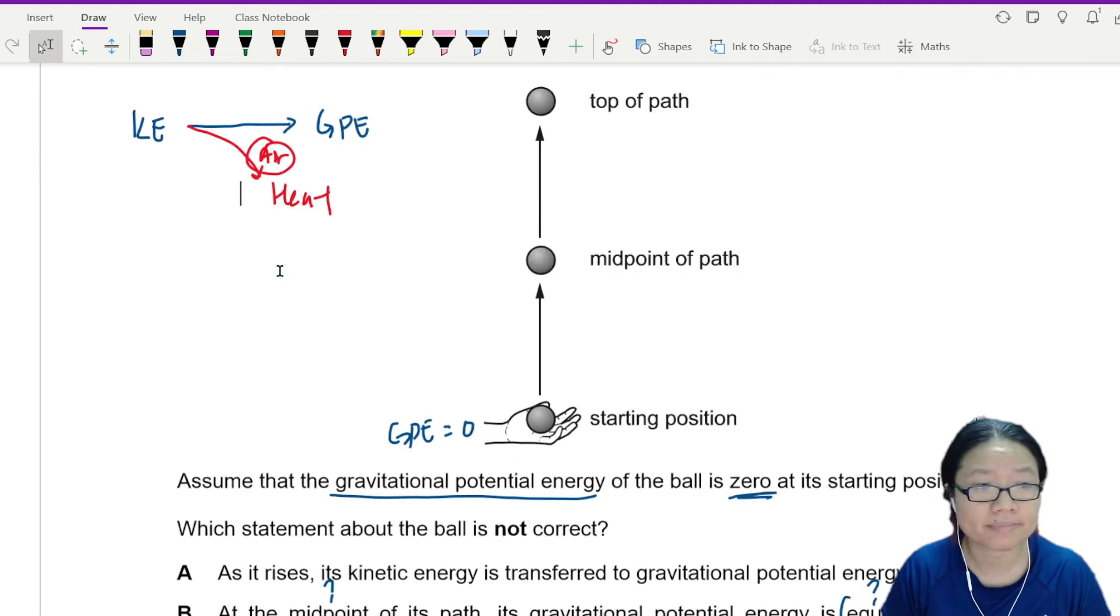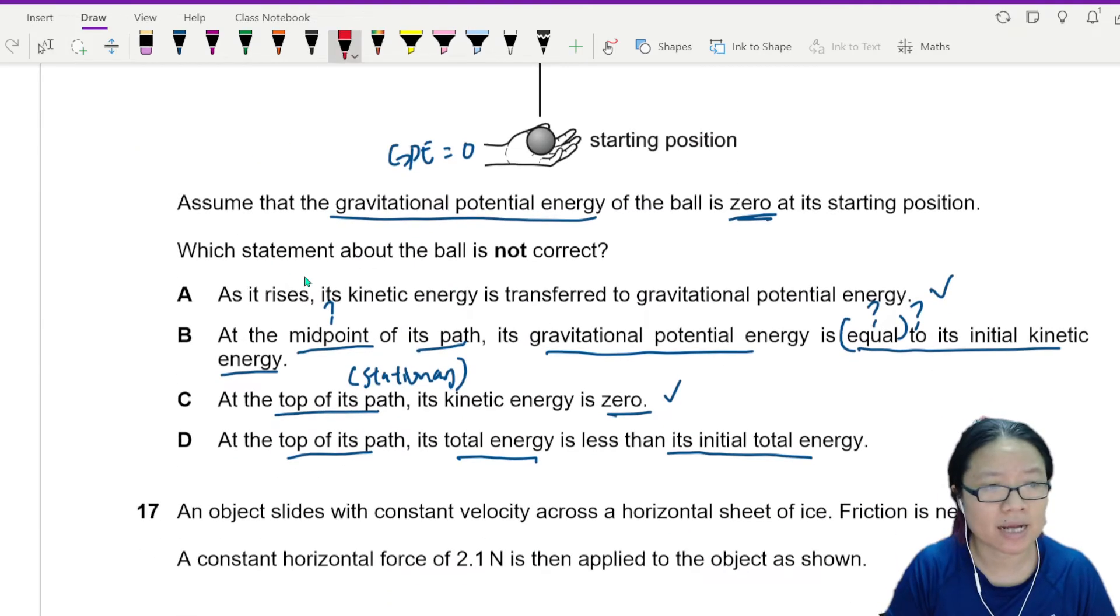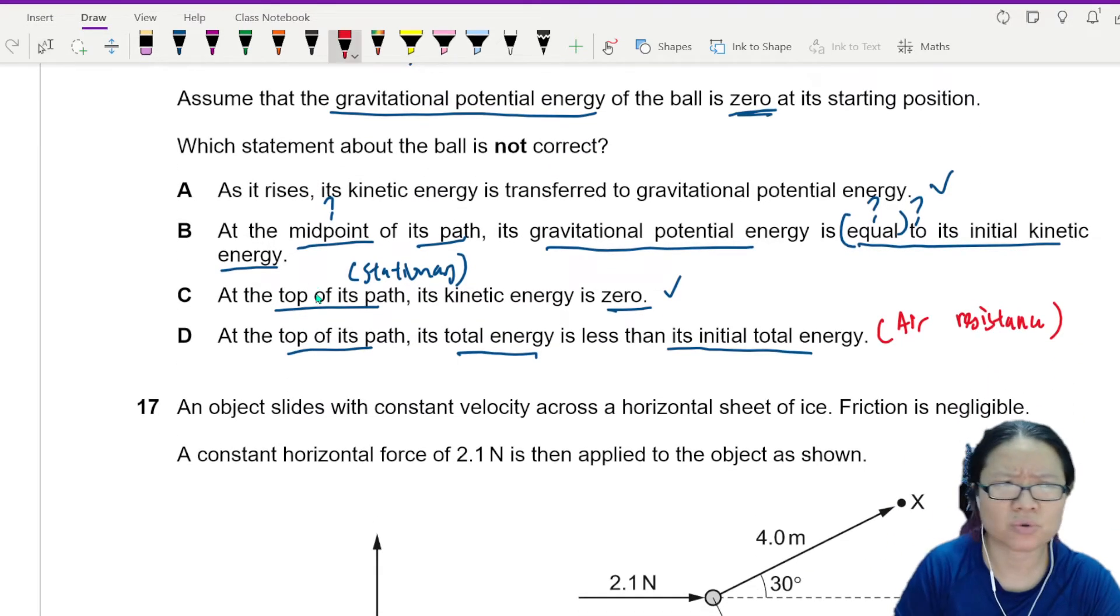So this means D is correct. Indeed, the total energy is less than the initial total energy. This is because it is due to air resistance. So I guess the only answer that is wrong is B.